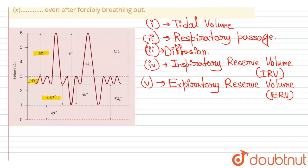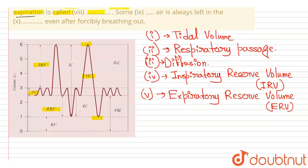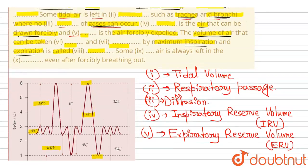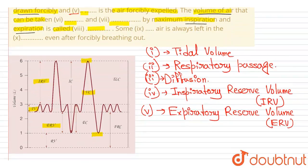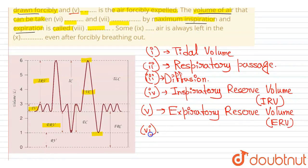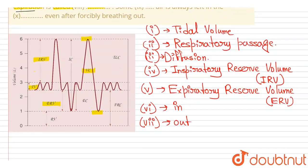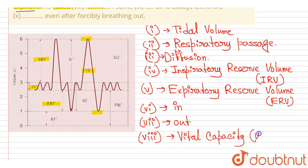As you can see in the diagram, the vital capacity is IRV plus ERV. So number six is 'taken in' for inspiration, number seven is 'taken out' for expiration, and number eight will be vital capacity, or VC.